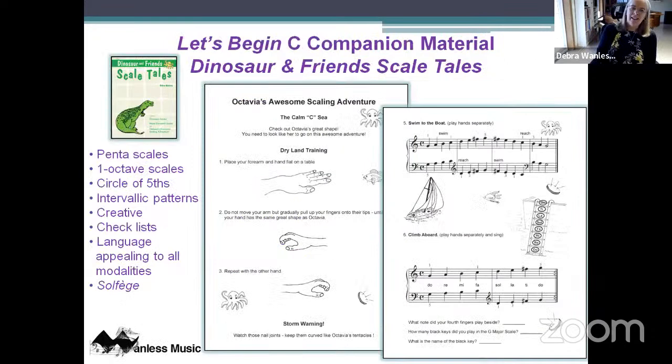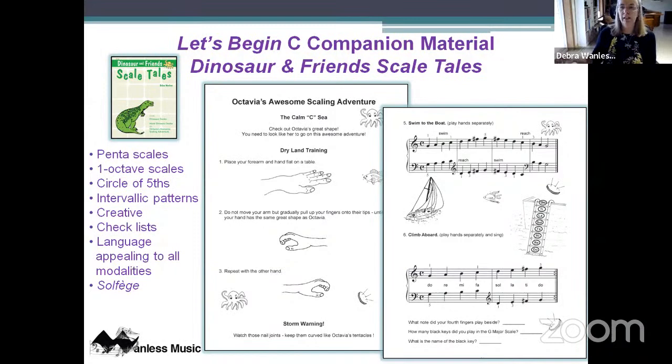This type of student — the finger creator — will come into your lesson and tell you they've changed the ending of a piece because they think it's better. They're not being disrespectful — they're being thinkers and creators. After the pentascales, we're introduced to Octavia, who teaches one-octave scales through tetrachords and the circle of fifths. We also develop intervallic reading, same creative aspects, same checklists, and introduce solfege with movable do.